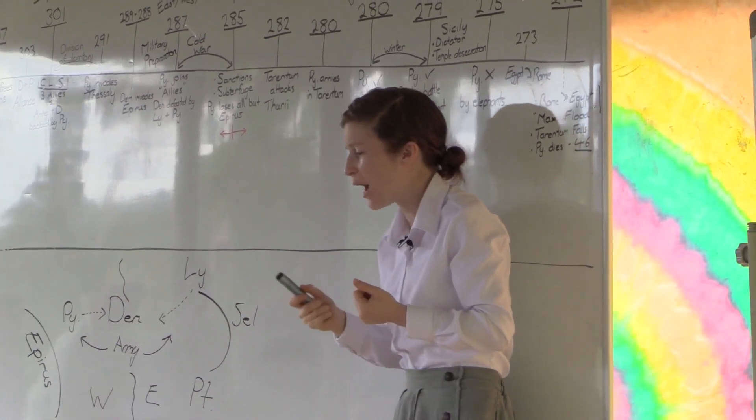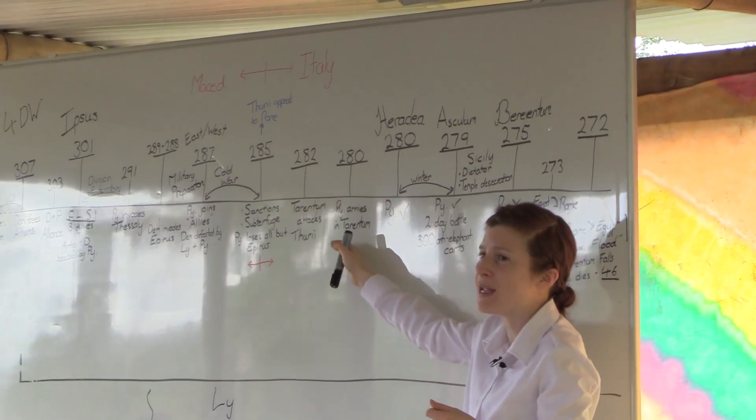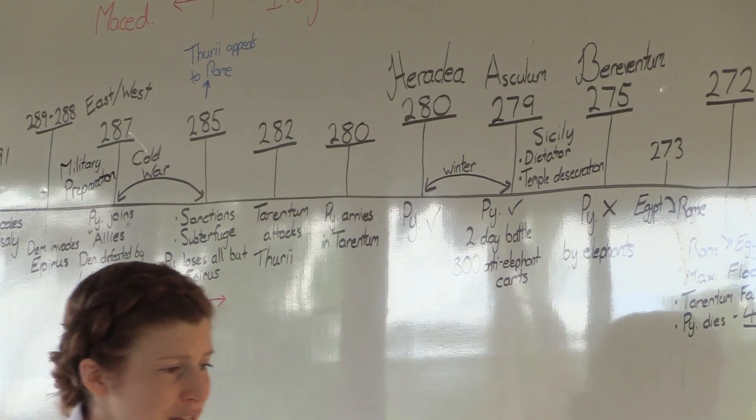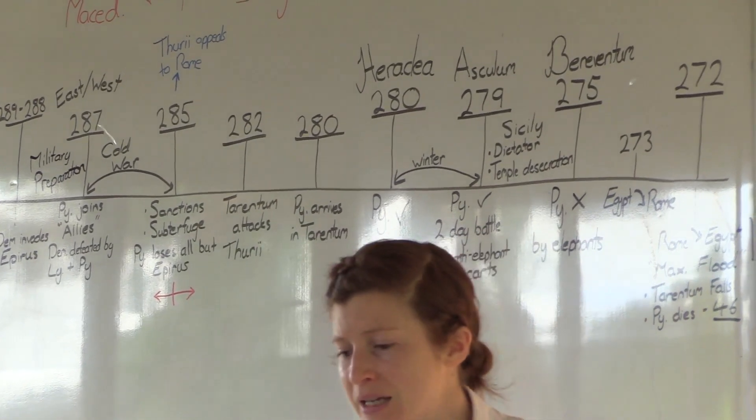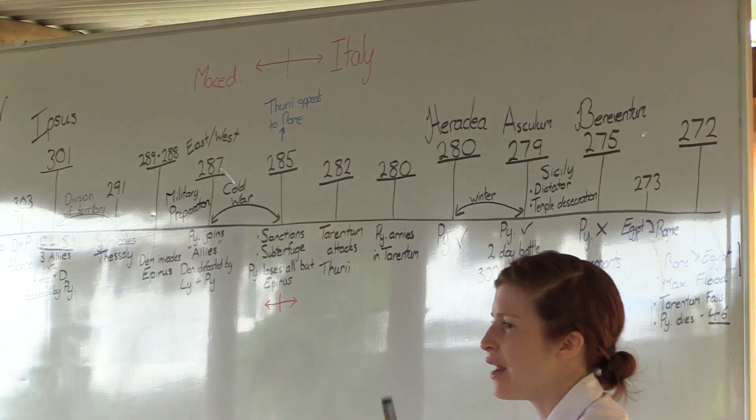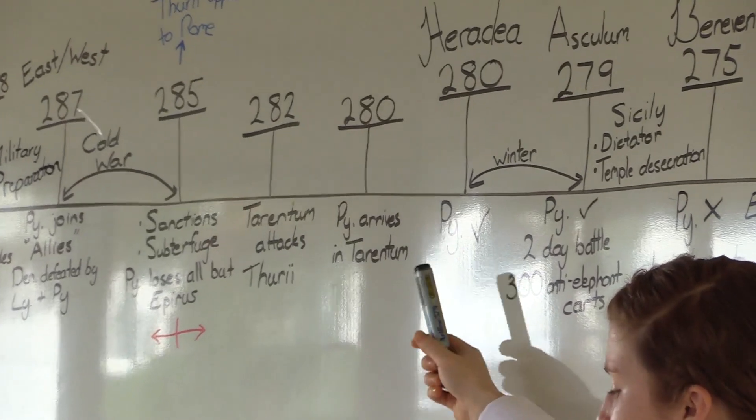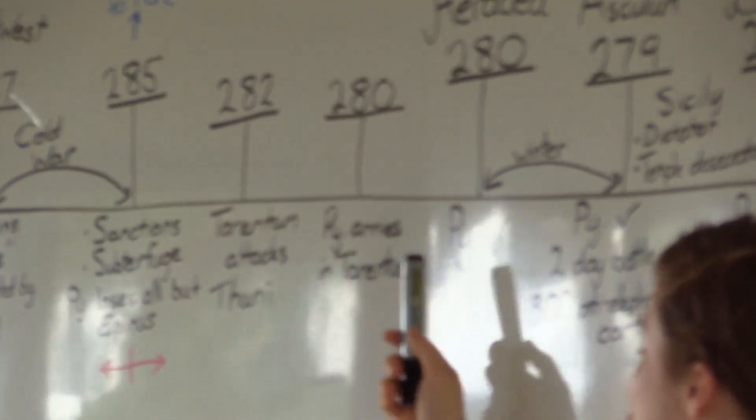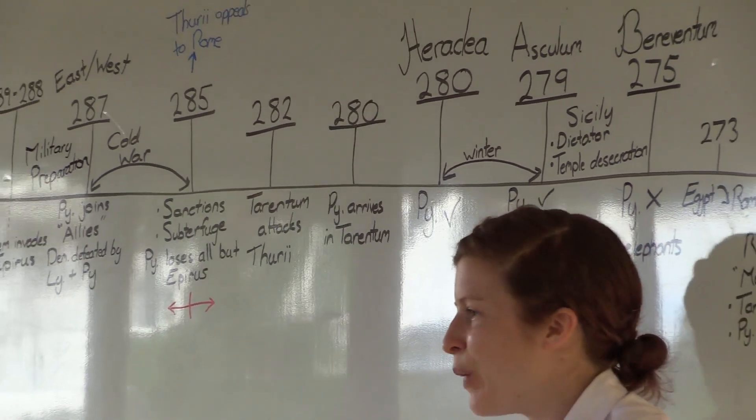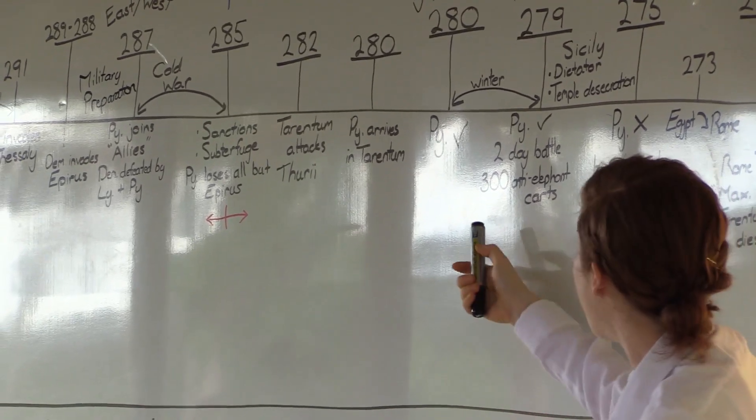And Tarentum, not strong enough to fight Rome themselves, asked Pyrrhus to come and fight on their behalf. Pyrrhus arrives in Tarentum in 280 BC and begins military preparation. He's not yet ready to engage in war with Rome. His army is scattered, they haven't come together, he hasn't finished war preparation, but Rome pushes and the war is forced on him. So they fight the first battle near the town of Heraclea between Heraclea and Pandosia in 280 BC and Pyrrhus wins and why did Pyrrhus win? He brought with him 20 war elephants and it's those war elephants, a new mode of warfare that Rome had not yet encountered that gives Pyrrhus the victory.